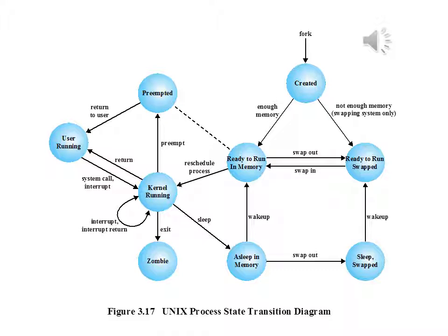Two processes are unique in UNIX. Process 0 is a special process created when the system boots — it is predefined as a data structure loaded at boot time and serves as the swapper process. Process 0 spawns Process 1, referred to as the init process. All other processes in the system have Process 1 as an ancestor. When a new interactive user logs onto the system, it is Process 1 that creates a user process for that user. Subsequently, the user process can create child processes in a branching tree, so that any particular application can consist of a number of related processes.